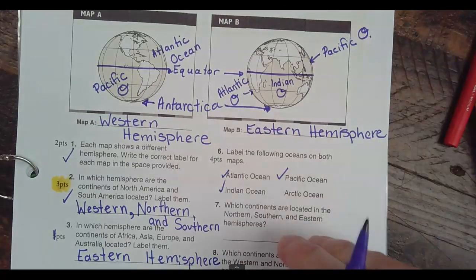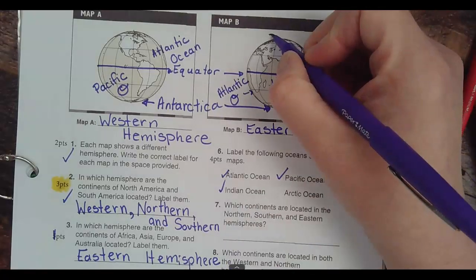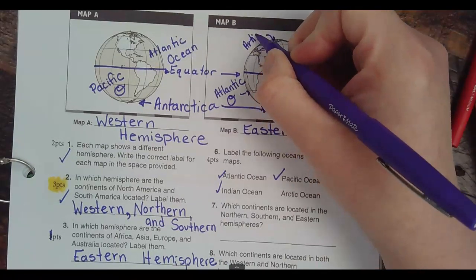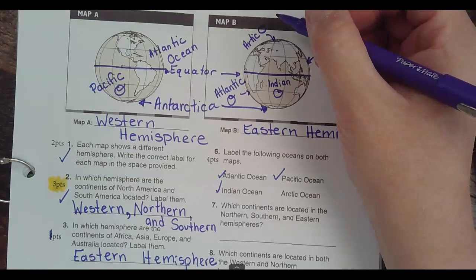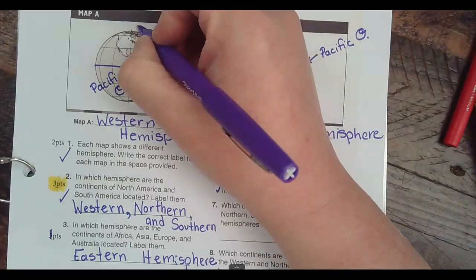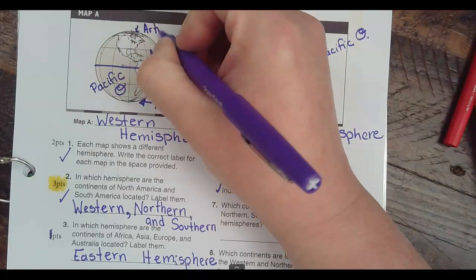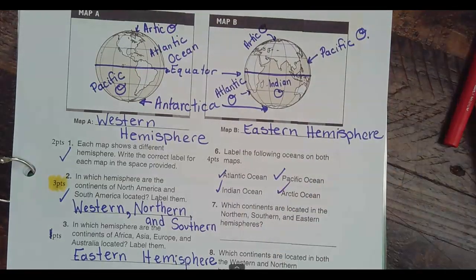Now we need to do the Arctic Ocean. I think the Arctic Ocean is in both of them. The Arctic Ocean is way at the tippy-tippy top over here, and the Arctic Ocean is way at the tippy-tippy top over here on the other map too. Any questions with that one?